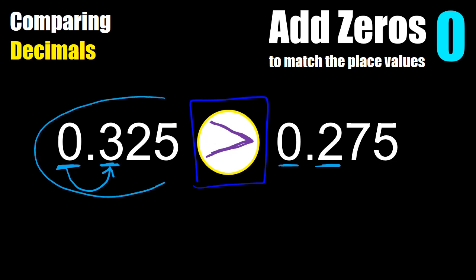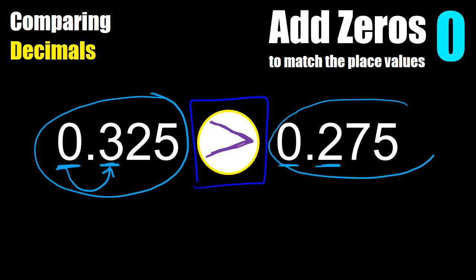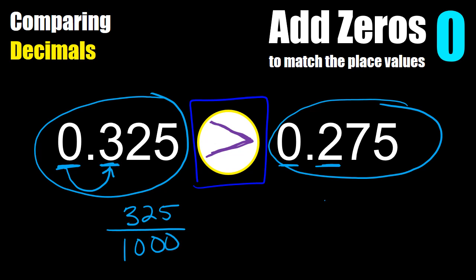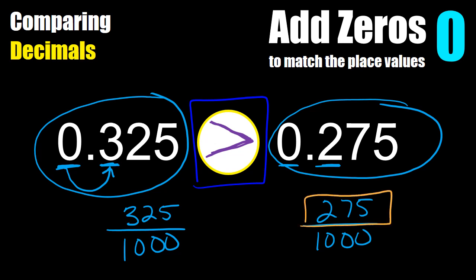So I'm going to use the greater than sign, saying that three hundred and twenty-five thousandths is greater than two hundred and seventy-five thousandths. Another strategy: if you write them as fractions — three hundred and twenty-five over a thousand and two hundred and seventy-five over a thousand — you can just compare the numerators.